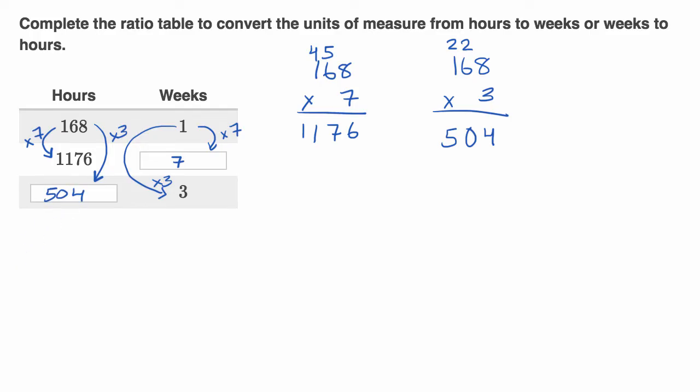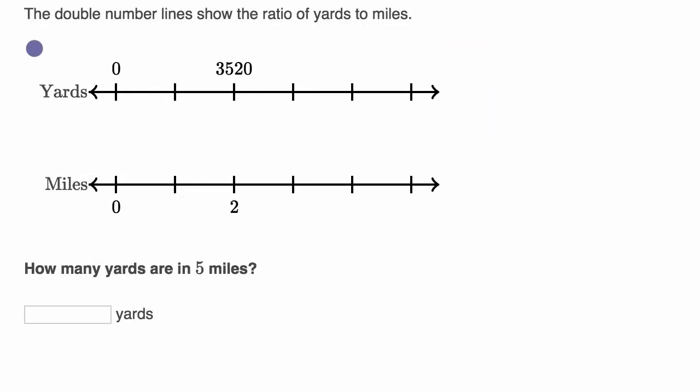Let's do another example. So here they tell us the double number lines show the ratio of yards to miles. So the ratio of yards to miles, it looks like we have 3,520 yards for every two miles. And you see that on this double number line right over here. Then they say, how many yards are in five miles? So pause this video and try to figure it out.